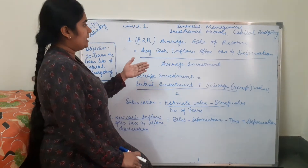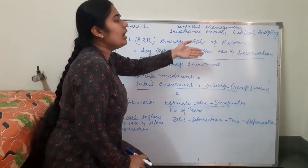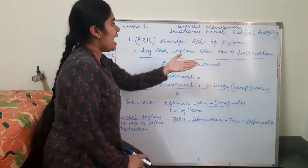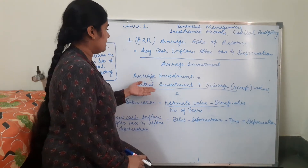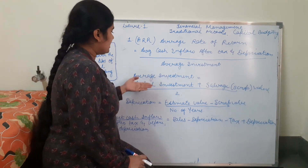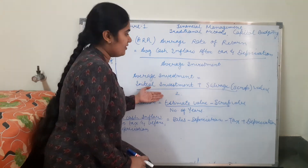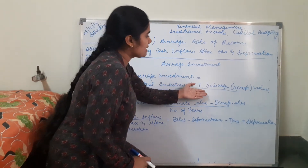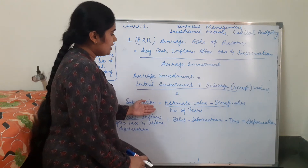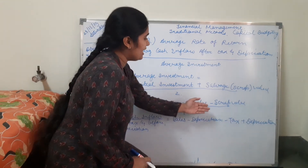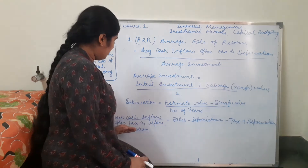Average rate of return is average cash inflow after tax and depreciation upon average investment. Average investment is the initial investment plus the scrap value upon two. Depreciation is estimated value minus scrap value upon number of years.